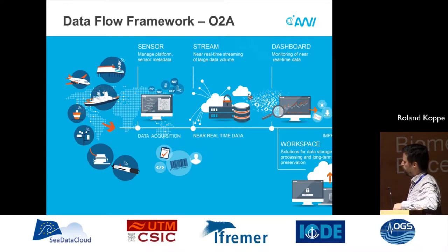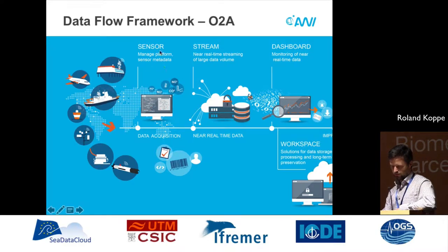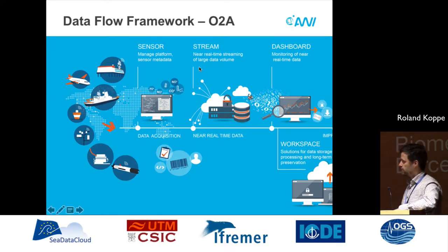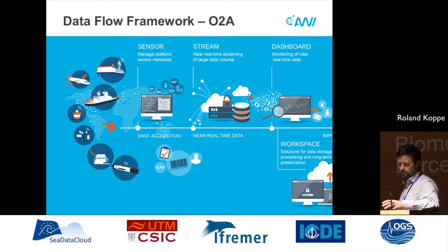We have a diagram here called the data flow framework. On the left-hand side we have different platforms — research vessels, stations, buoys, and so on. The first part is the sensor description, where sensors, devices, and platforms have to be described. It's based on SensorML — I'll come to some details a few slides later. The next part is the streaming component, which is able to harvest data from platforms and bring it into our storage systems and also into a real-time database.